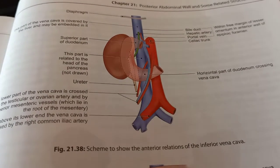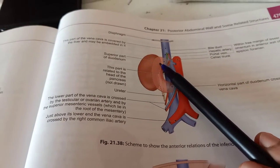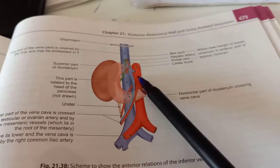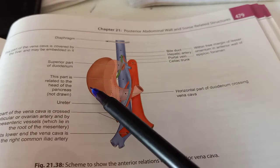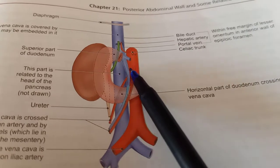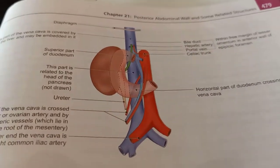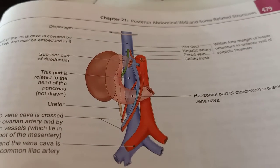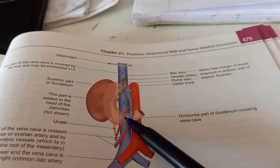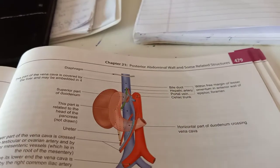Next anterior relation is the superior part of the duodenum — the first part of the duodenum. Then the head of the pancreas, which is present inside the C-shaped duodenum. So the superior part of the duodenum and the head of the pancreas are anterior relations of the IVC. Next is the horizontal part of the duodenum — both the superior and horizontal parts of the duodenum are anterior relations.